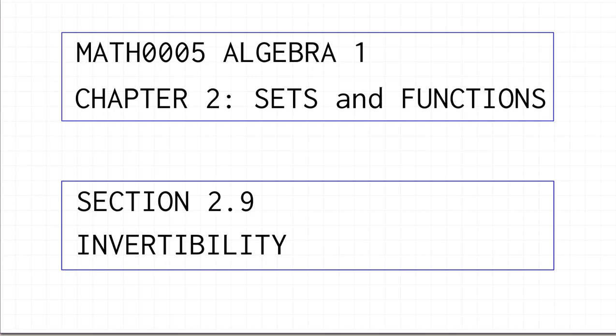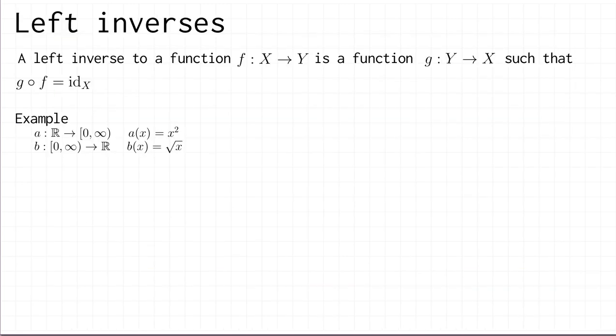We are now going to study some more function properties, specifically the different ways in which a function can be invertible. To begin with, we have the idea of a left inverse. The definition is that a left inverse to a function f from a set x to a set y is defined to be a function g that goes in the other direction, so g is a function from y to x, such that g composed with f is the identity on x. You can see why it's called a left inverse to f — g appears on the left of f in this composition.